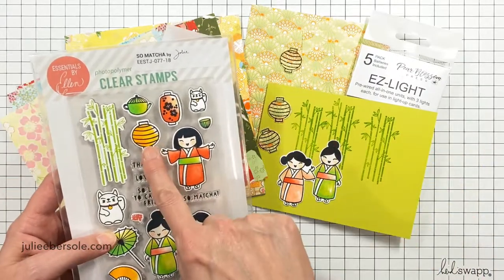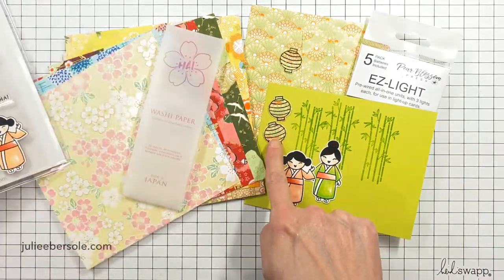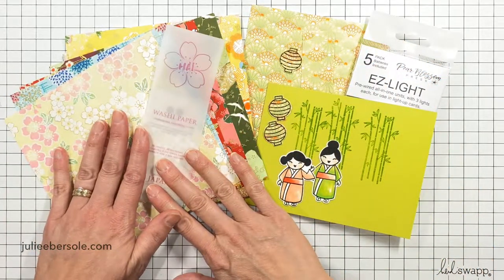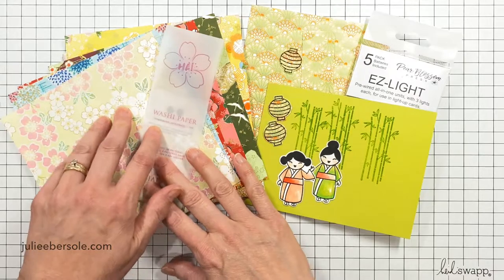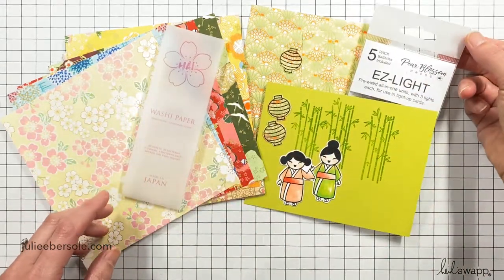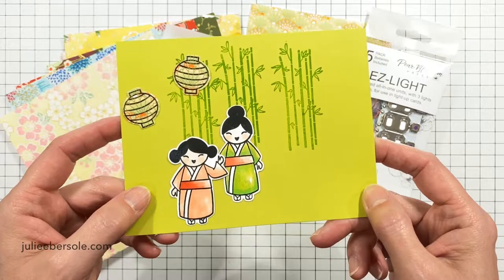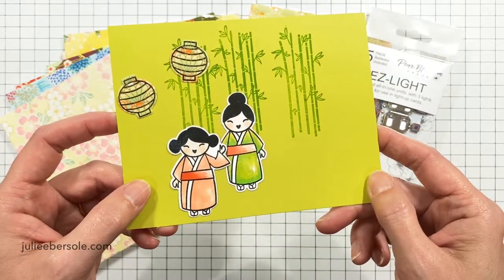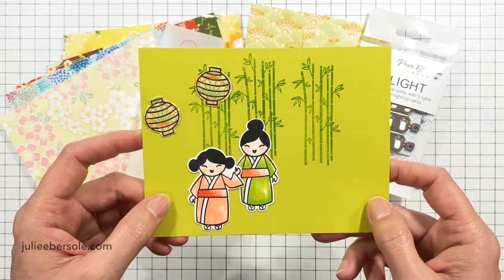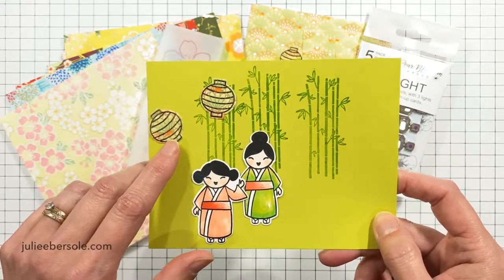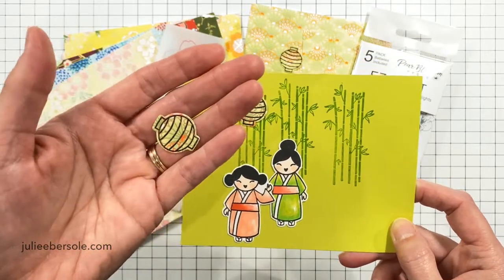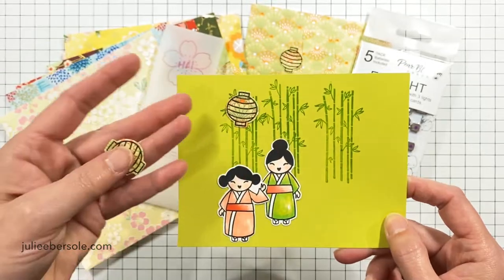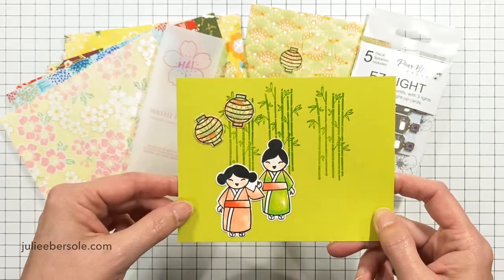As luck would have it, I had many of these images already stamped and colored in. All I had to do was die cut them for this project, and I did black emboss the little paper lanterns onto one of those beautiful pieces of washi paper. I love washi paper. It has such a beautiful texture, and the things I had colored in previously happened to match the colors in this washi paper, so this was like providential. These are all the components I'm going to be working with to build my scene.